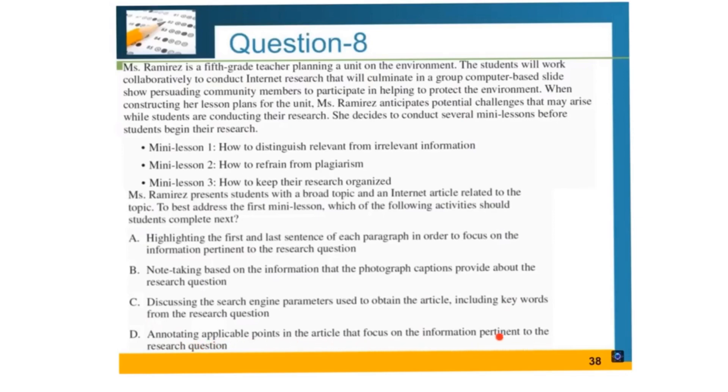In this question we have a fifth grade teacher planning a unit about the environment and their students will conduct internet research. She prepares three mini lessons before the internet research. We're looking for an answer about mini lesson one, which is how to tell the difference between relevant and irrelevant information. The answer we need to look for is some applicable points that are related to our internet research so that way we can distinguish it from relevant to irrelevant. The answer is going to be D: annotating applicable points in the article that focus on the information pertinent to the research question.